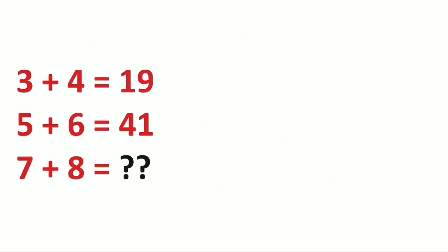Here we have a puzzle which is 3 plus 4 is 19, 5 plus 6 is 41 and what is 7 plus 8. So let us see the logic behind this and don't forget to tell me your answer in the comment box. Now here we can write this 19 as you just add 3 plus 4 plus 3 times 4. So 7 plus 12 gives us this 19.